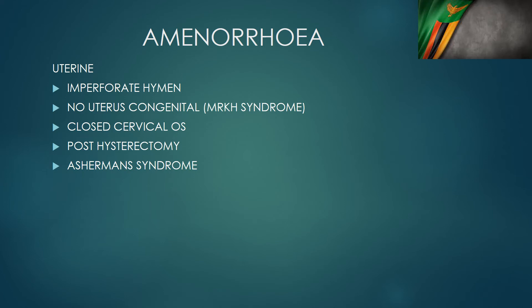I normally call it MRKH syndrome because the name is hard to pronounce. You might have a woman with cervical stenosis — sometimes it's post-delivery, they have a cervical tear, it's sutured, then it heals and closes, and then the menses don't come. Then you have women, surprisingly, who come post-hysterectomy. Many in our setup were not told that there was a hysterectomy, or they forget there was a hysterectomy, and then they come saying they are not having menses and they want to have a baby. So that is also a possible uterine cause of amenorrhea.